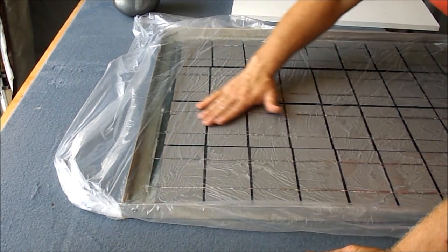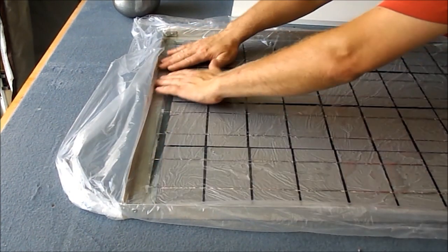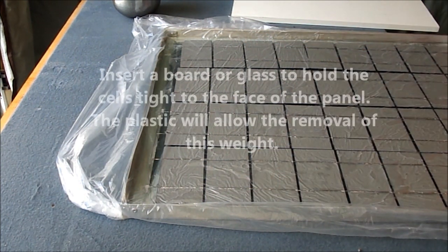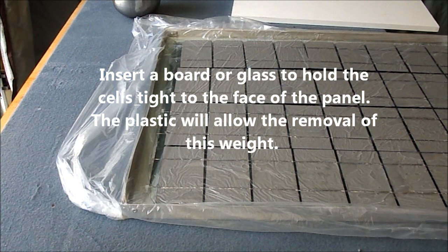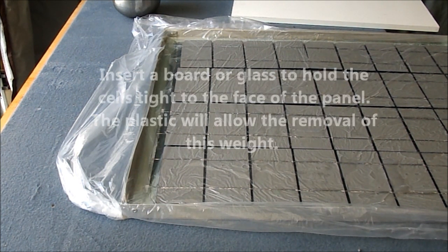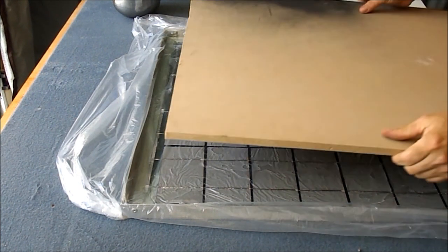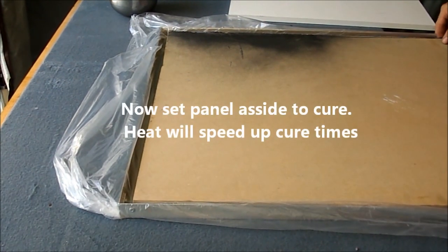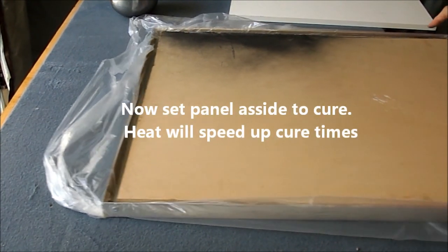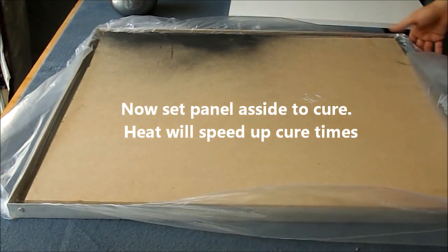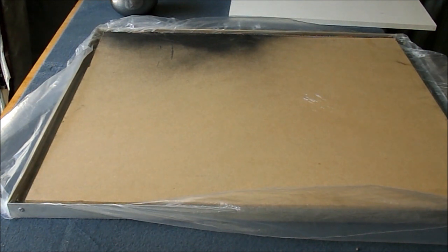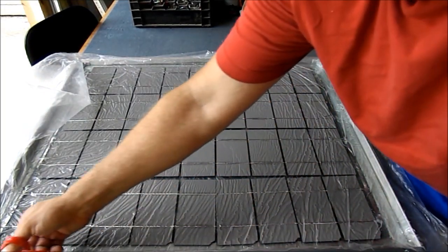Once you have the plastic smoothed and you are happy that all the air is out, you will then set a board over top of the backs of the cells to hold all the cells tight against the glass. At this point, you can set the panel aside and allow it to dry. In sunlight, the panel should dry within a couple hours if the temperature is above 70. However, it is best to set the panel aside for a day or two and let the panel cure naturally.